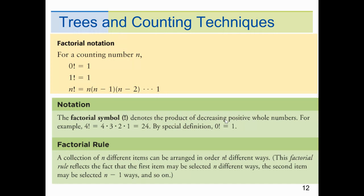For factorials: by definition, zero factorial equals one, one factorial equals one, and N factorial is N times N minus 1 times N minus 2 and so forth, represented by the exclamation point. So four factorial equals 4 times 3 times 2 times 1, which is 24. A special definition is that zero factorial equals one.